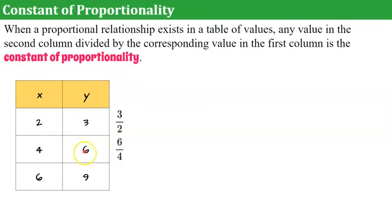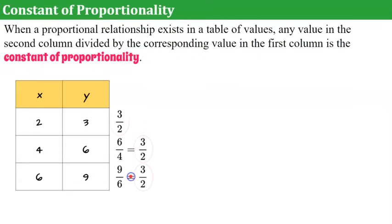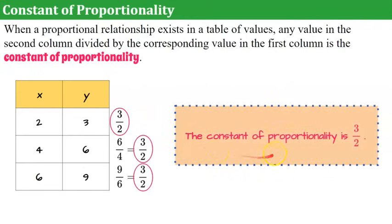Let's look at y over x: 6 over 4, which simplifies to 3/2. Now 9 over 6 is also equal to 3 over 2. So the ratio y to x is the same for all rows, and they all simplify to 3/2. Therefore, the constant of proportionality is 3/2.